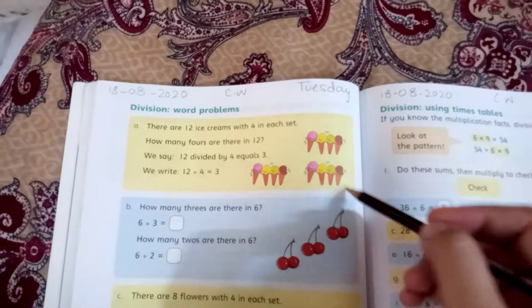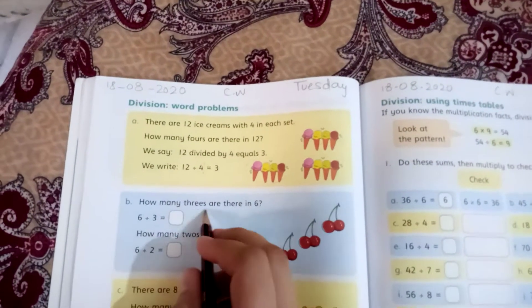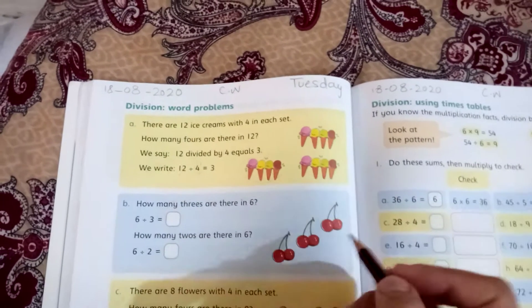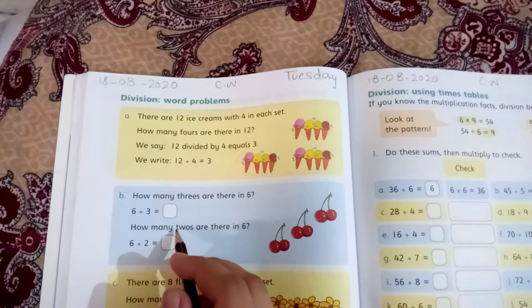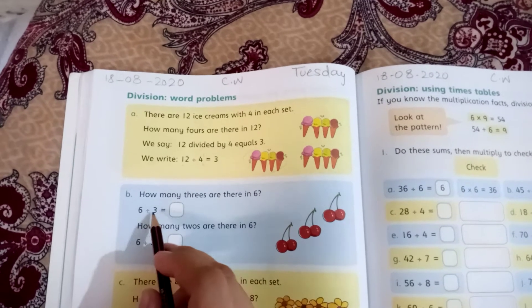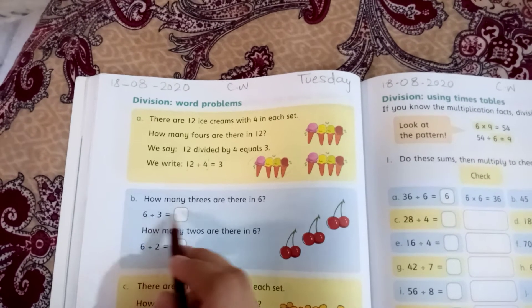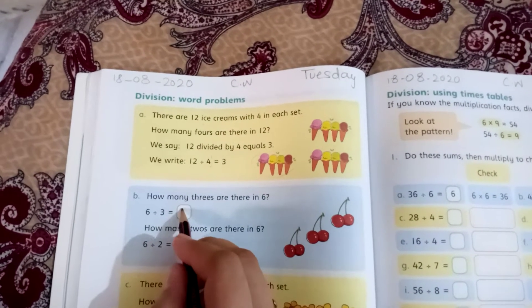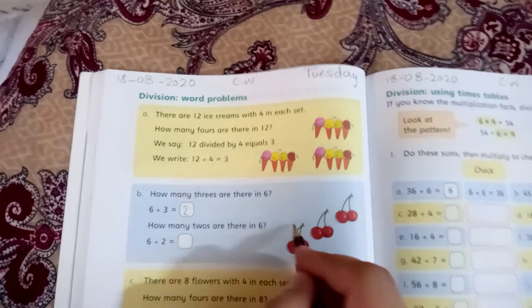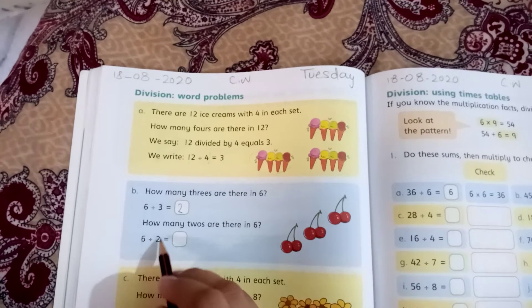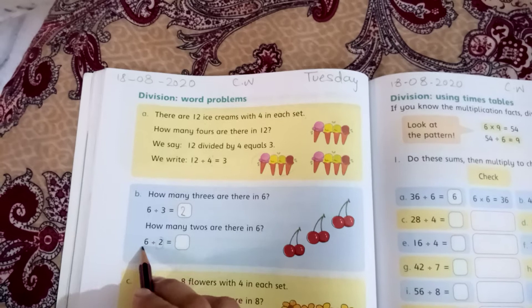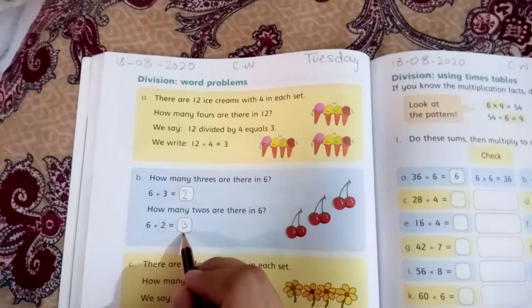How many 3s are there in 6? 3 divided by 6. How many 2s are there in 6? 2 divided by 6. Two 3s are 6.